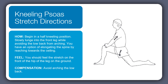Last is the Kneeling Psoas Stretch. You're in a kneeling position with the front knee over the ankle and the hips over the back knee. Gently bring your weight forward until you feel some sensation through the back leg and thigh. Be careful not to overarch the spine here. You can do reps or hold the stretch.